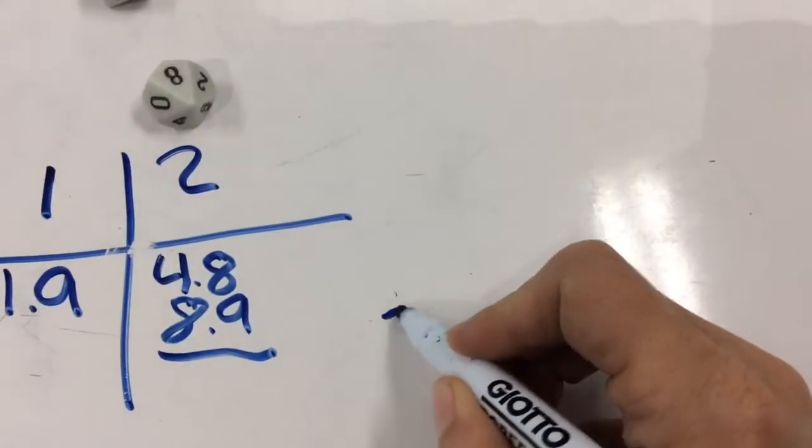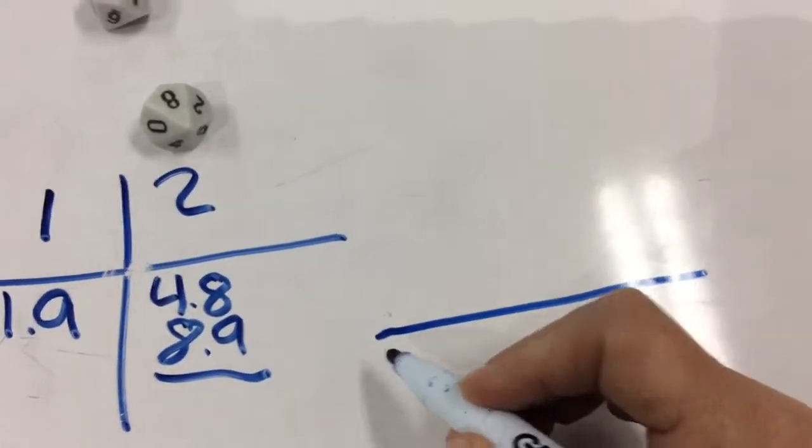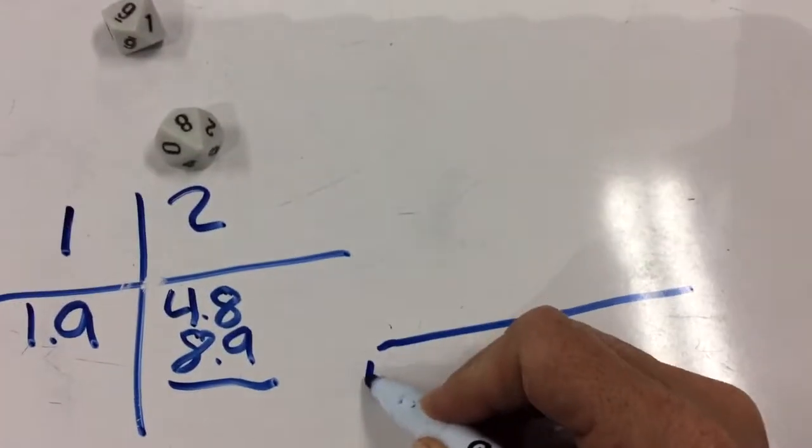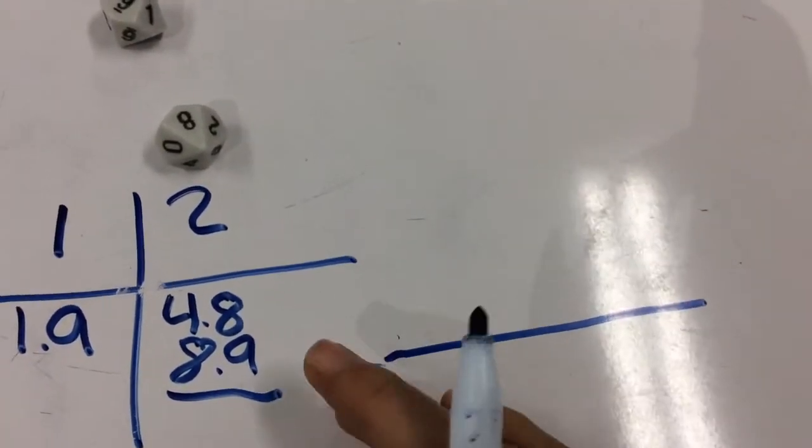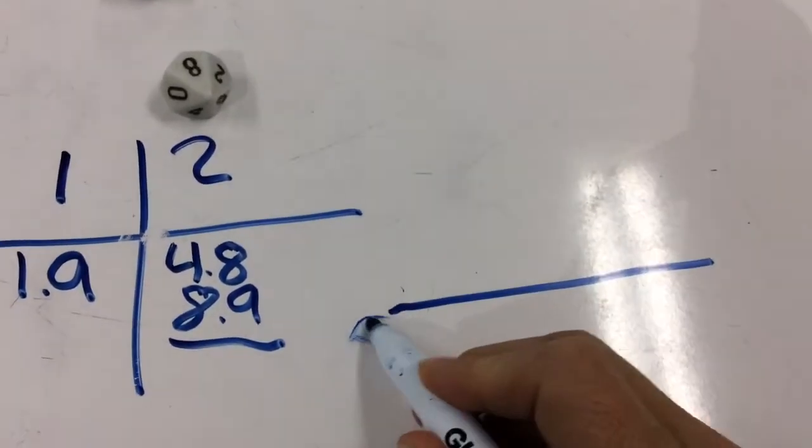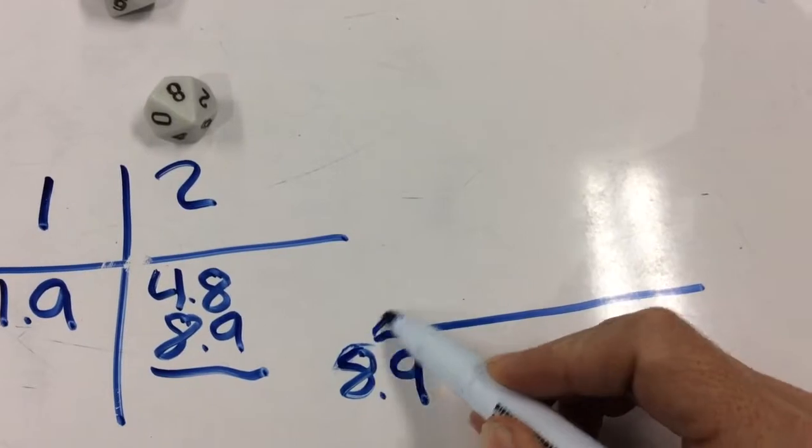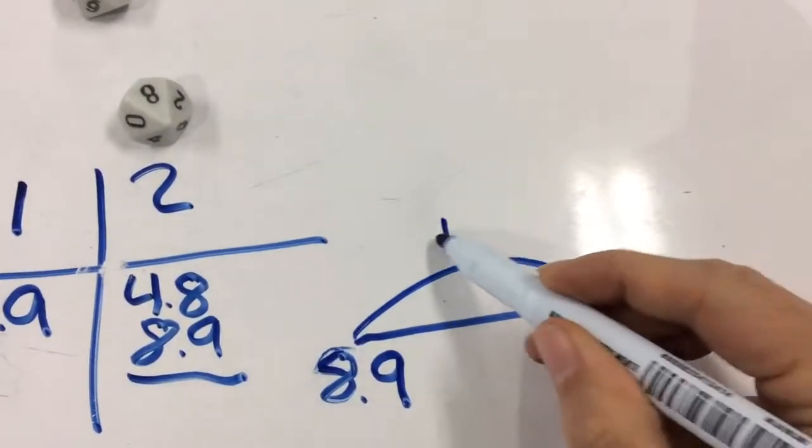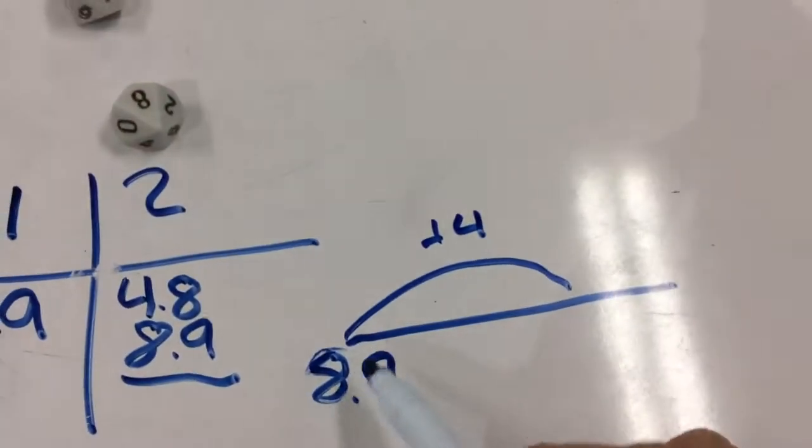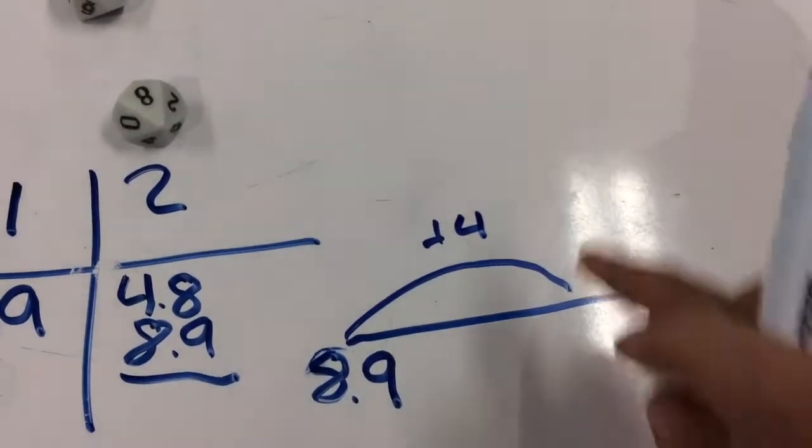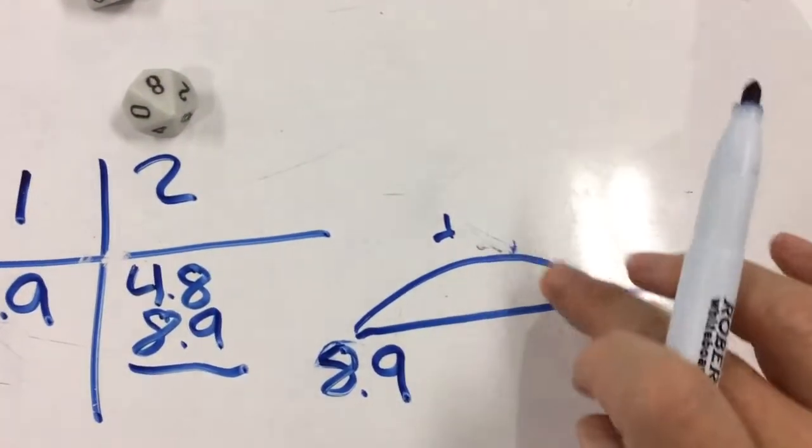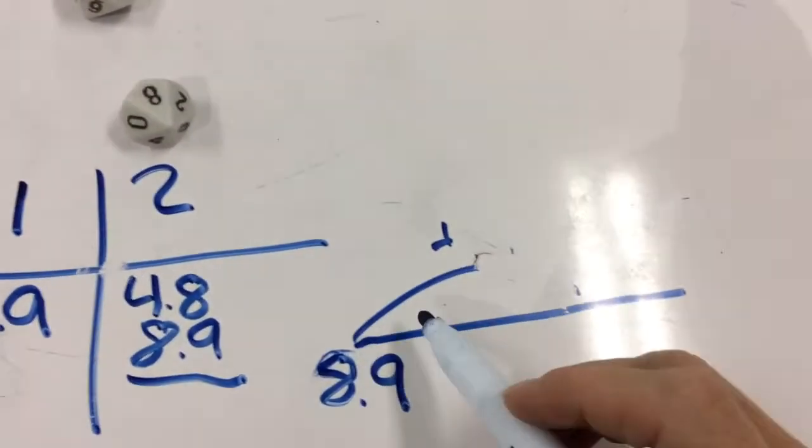Or a number line is what we've been doing this week. So starting with 4.8, actually it's easier sometimes to start with a bigger number. So start with 8.9. And then you could move the four.